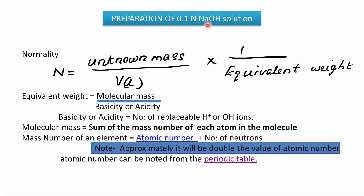To use that equation, we need to know the molecular mass of NaOH. The molecular mass of NaOH equals the sum of the mass numbers of each atom — sodium, oxygen, and hydrogen. We sum all those atoms to get the molecular mass of NaOH.